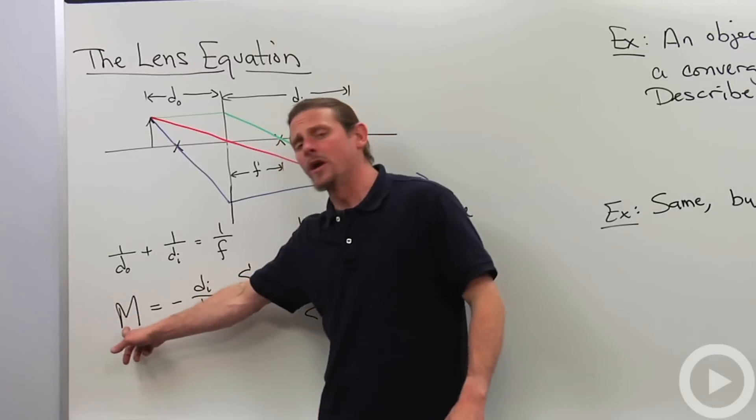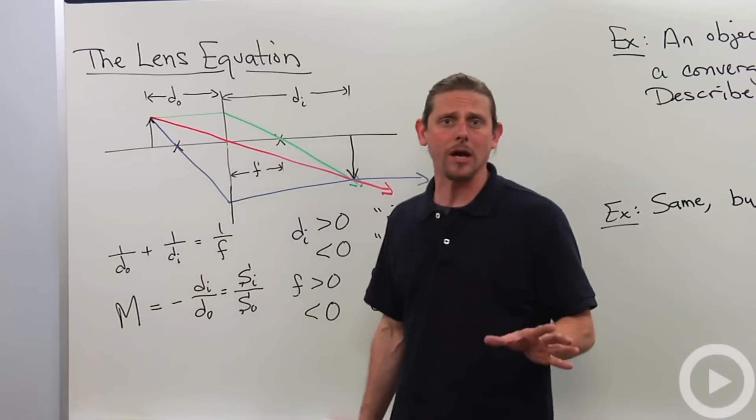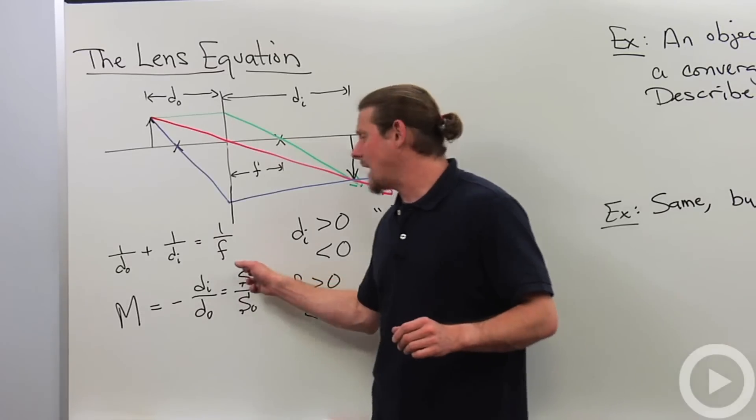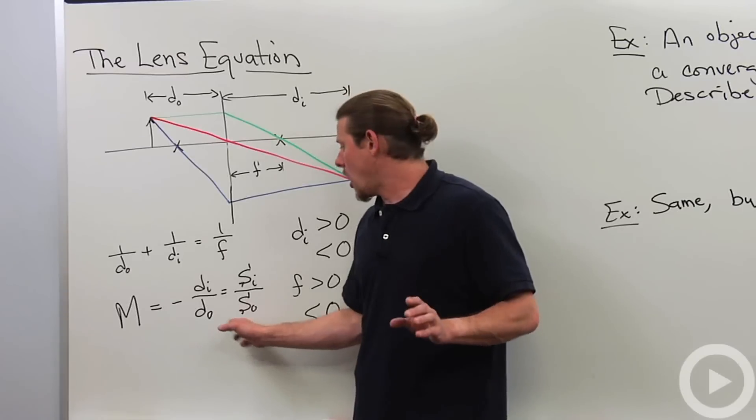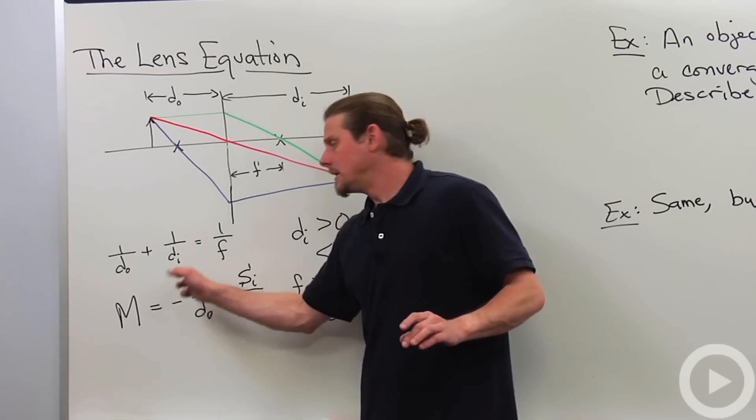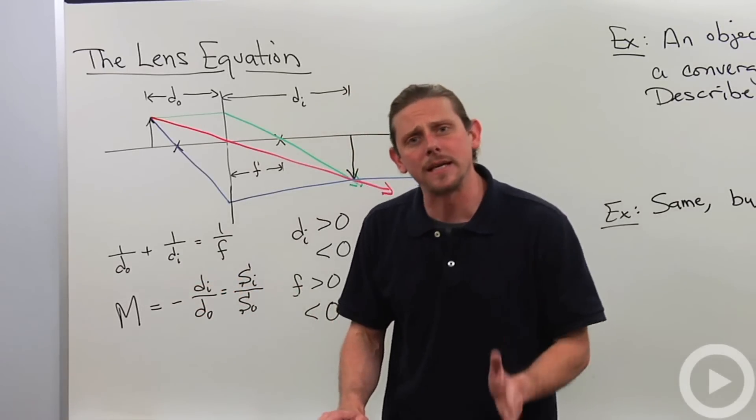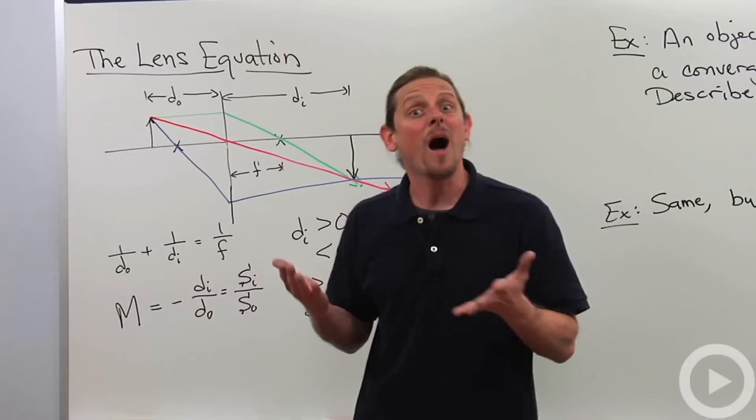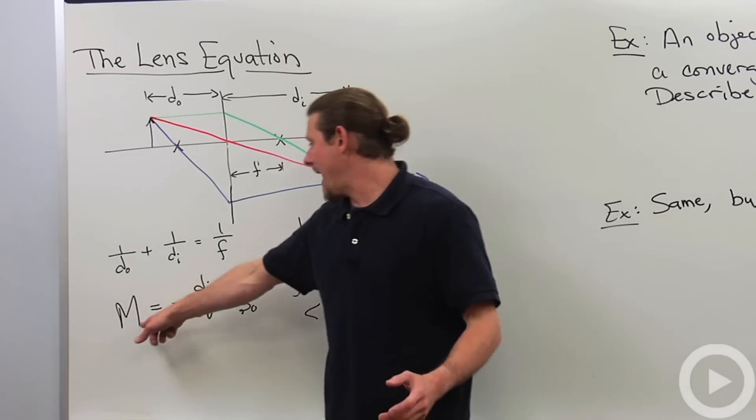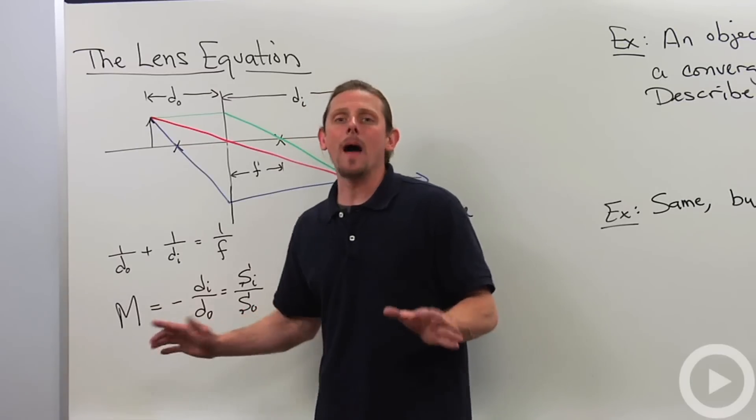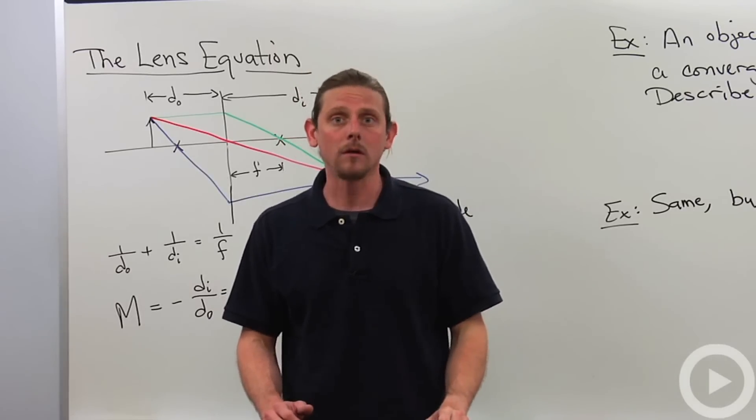Now, we can also pull out of this a quantitative description of the magnification of the object. Magnification is defined as the size of the image divided by the size of the object, and it's also given by negative distance of the image over distance of the object. So what that indicates is that if the distance of the image is positive, which means that the image is on the correct side, then the magnification will be negative. And that means that real images must be inverted if you're only using one lens.